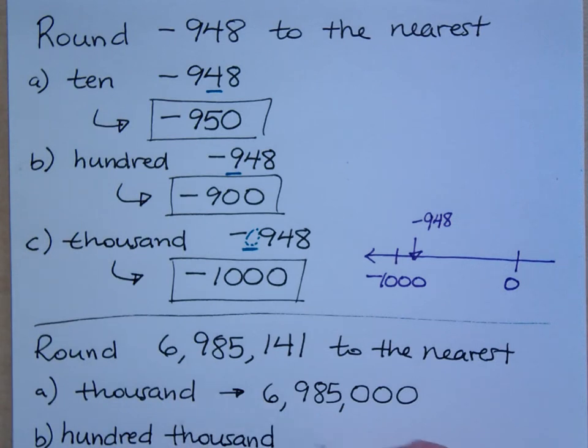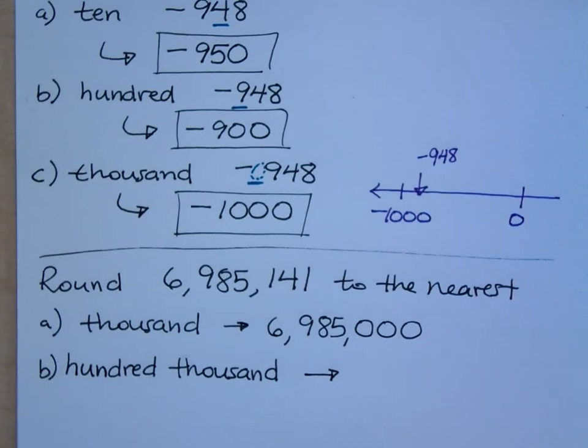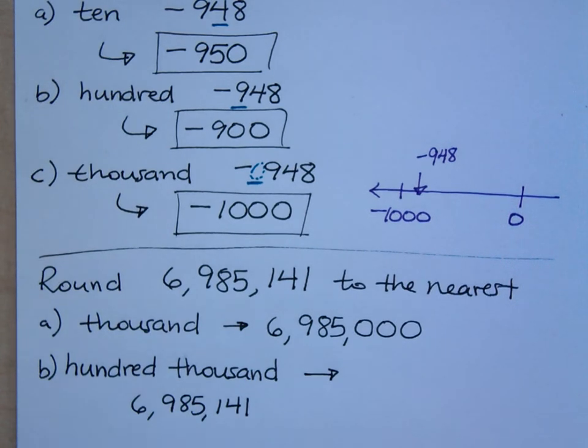If I round to the nearest 100,000. Tell you what, let's do this. If I look at this number, I'm going to go ahead and write this guy again for you. What digit is in the 100,000 spot? 9, so I look immediately to the right of that. Is this 8 going to make me round up or down?